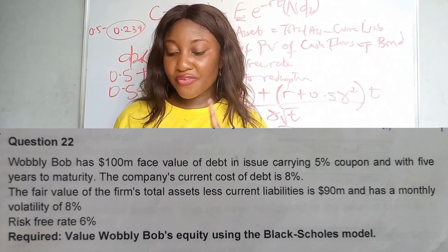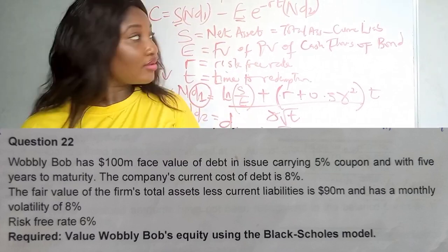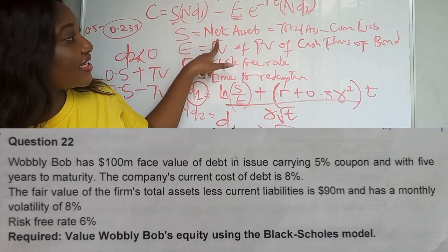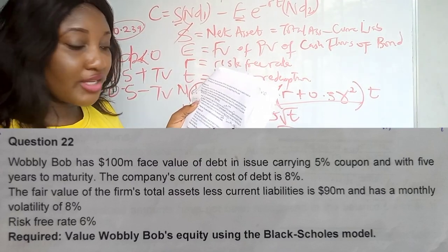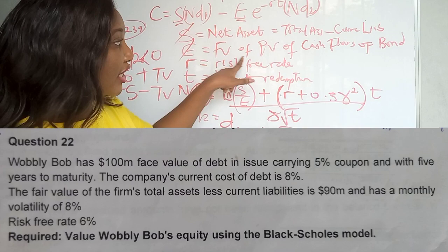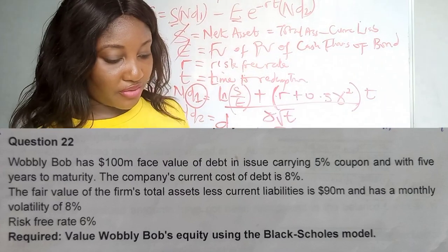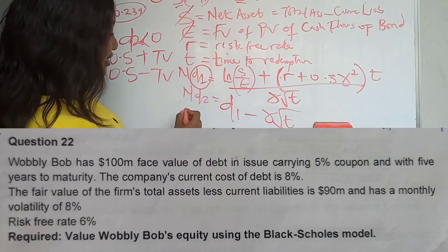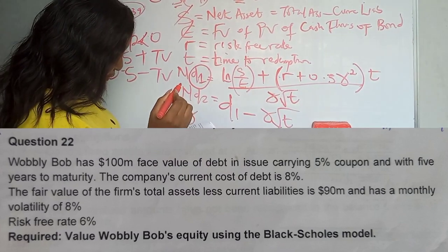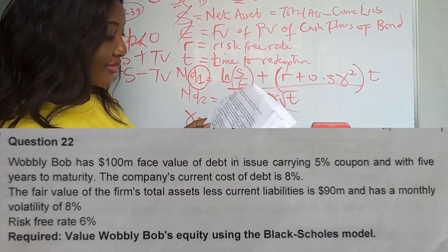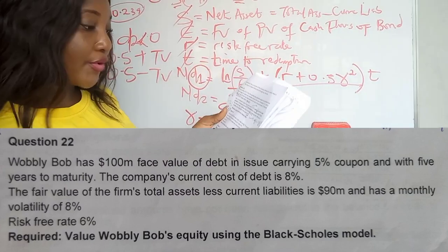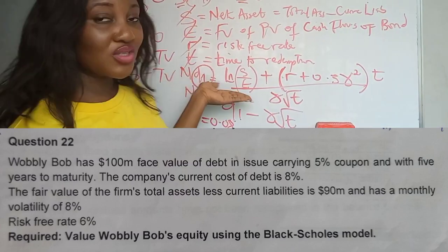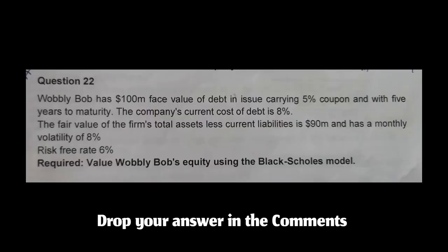For example, if d1 = 0.0685, look up 0.06 and 0.00 on the normal distribution table to get a table value of 0.239. Since 0.0685 is greater than zero, N(d1) = 0.5 + 0.239. A practice question: Bob has 100 million face value of debt carrying 5% coupon with five years to maturity, cost of debt 8%, fair value of net assets 90 million, monthly volatility 8%, risk-free rate 6%, five years to maturity. Use the formula to solve.